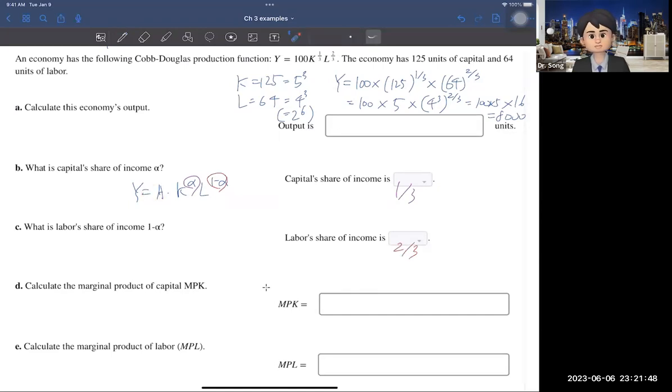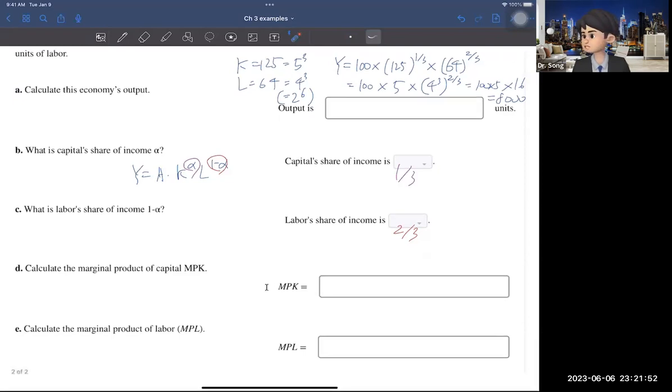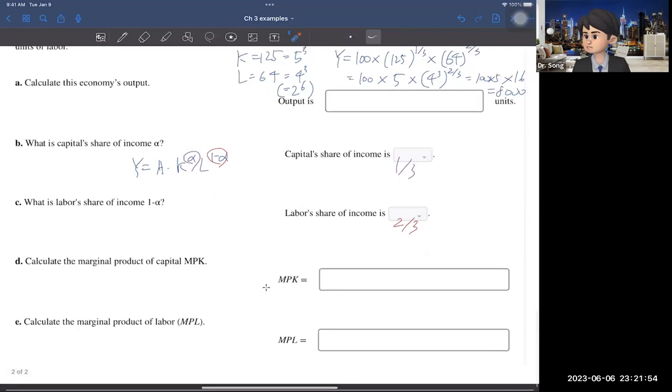So, A is high. That means that it's probably a developed or best country. Now, the last two questions ask you to find the marginal product of capital and marginal product of labor.